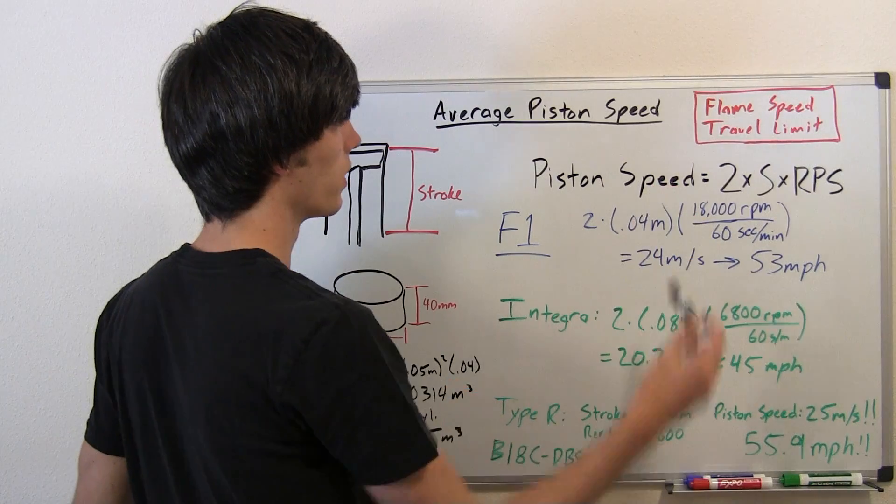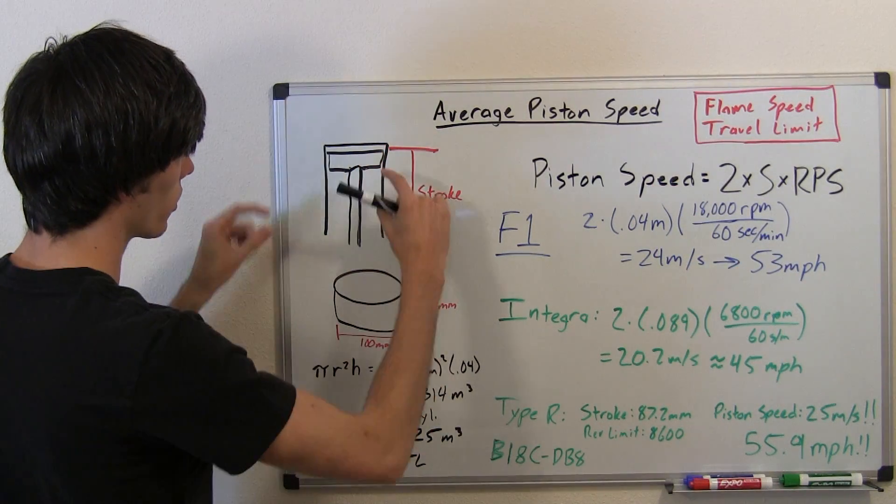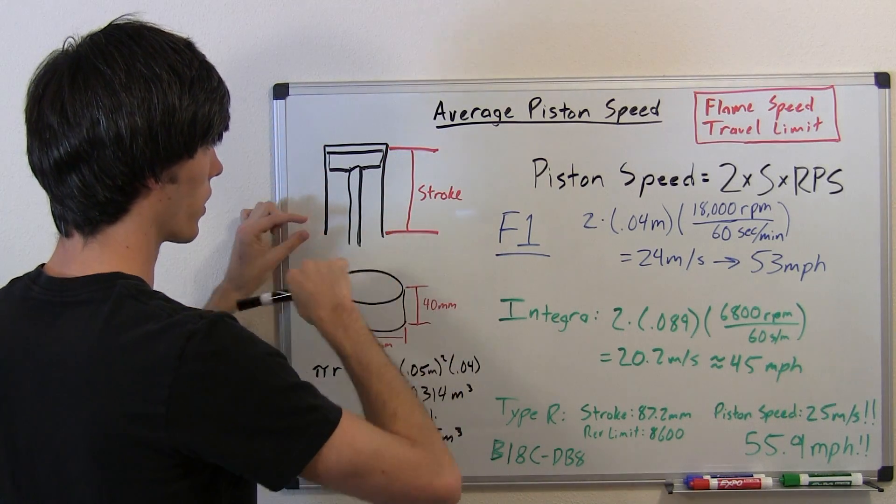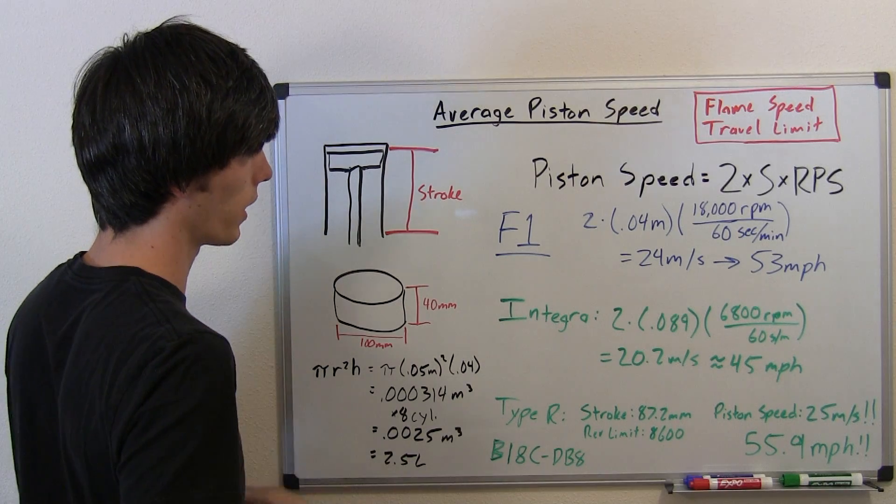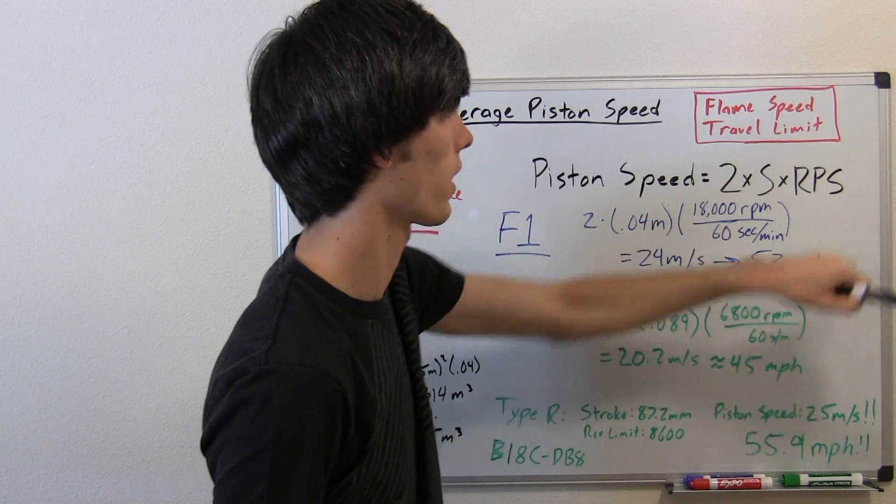Our piston speed is going to be two times our stroke. The reason two times our stroke is because it's not only going to travel to the top of the cylinder, but it's also going to travel back down to the bottom of the cylinder in one revolution of the crank. So, two times the stroke times the revolutions per second.